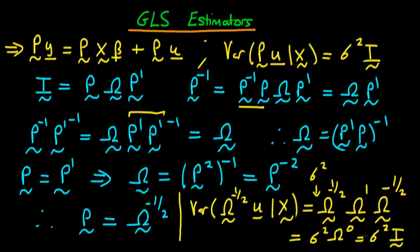Our transformed system has the property that the errors are homoscedastic. Hence we can estimate OLS on the transformed system and those estimators will be BLUE. In the next video, we're going to derive the explicit form of the GLS estimators and begin to derive the variance of GLS estimators.